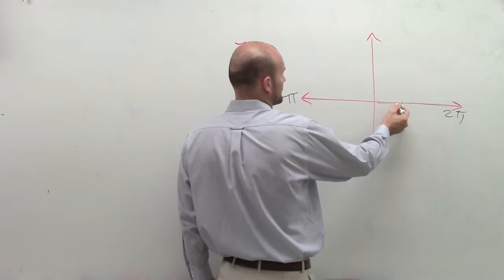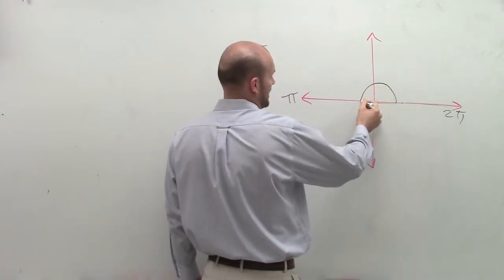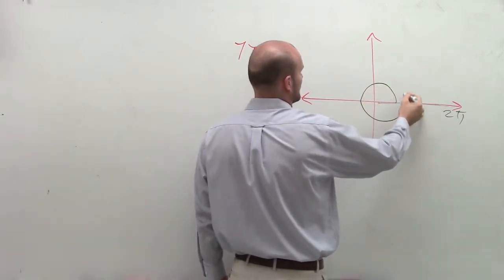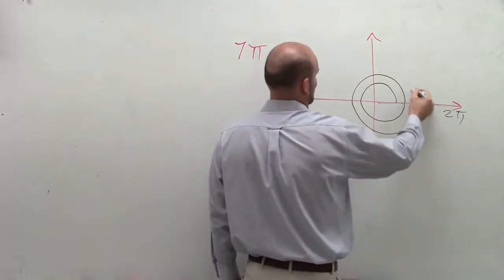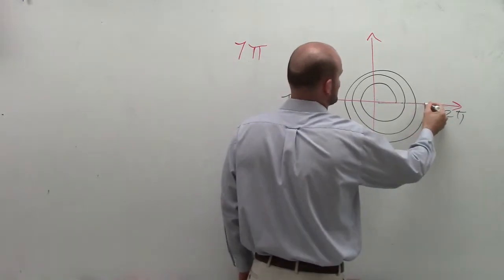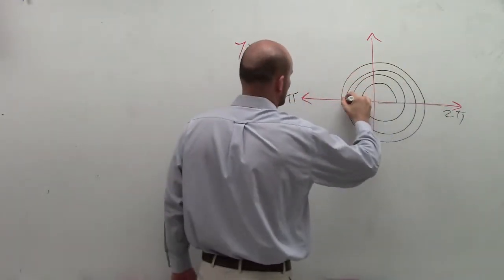If I start here, right? So I go here is 1 pi, here is 2 pi. Going around here is going to be 3 pi, 4 pi, 5 pi, 6 pi, 7 pi.